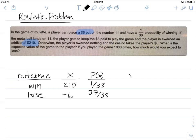Now my fourth column is the product x times P(x). So what I'm going to do is multiply across each row. So 210 times 1 over 38 gives me a value of 5.52632.